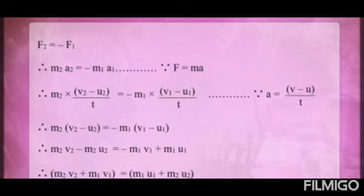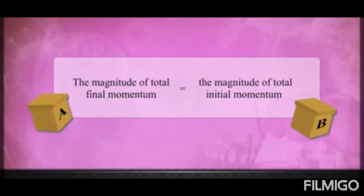Before collision the force was F2 and after collision it is −F1. Substituting F = m·a, we get m2·A2 = −m1·A1. Now substituting A2 = (V2 − U2)/T and A1 = (V1 − U1)/T, the T cancels on both sides, giving m2·(V2 − U2) = −m1·(V1 − U1). Rearranging the terms, we finally get m1·V1 + m2·V2 = m1·U1 + m2·U2.